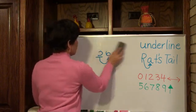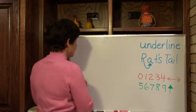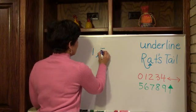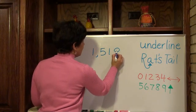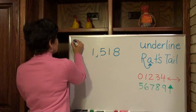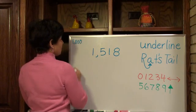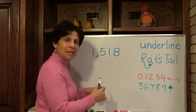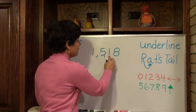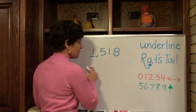Let's round a number to the nearest thousand now. Our number is 1518 and I'm going to round it to the nearest thousand. Okay, let's see what's in the thousands place. Ones, tens, hundreds, and thousands.